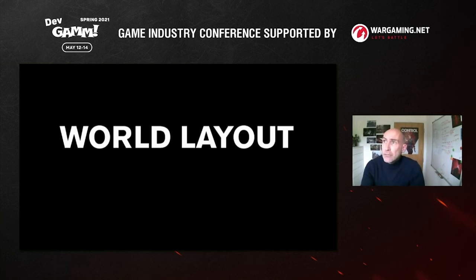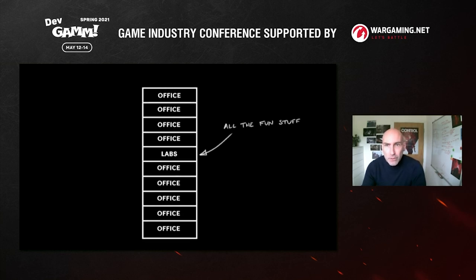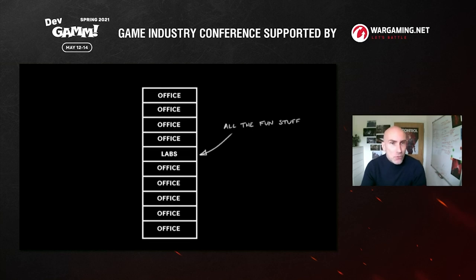I arrived early on in the project when it was just initial thoughts. When thinking about world layout, I remember seeing a whiteboard where a designer had sketched a cross-section of the Oldest House — a real government bureau office building with lots of offices, accounting, investigation floors, and one research lab floor. I looked at that whiteboard and said all the fun stuff is going to happen on the research floor. It wasn't giving enough potential space; it was too concentrated in one area. We had to rethink our approach to the Oldest House.